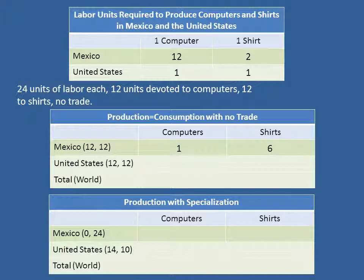In the United States, even easier, because it just takes one unit of labor to get one computer and one unit of labor to get one shirt. Therefore, if you devote 12 units of labor to computers, you get 12 computers. You devote 12 units of labor to shirts, you get 12 shirts. So the total world production of computers is 13 computers and total world production of shirts is 18 shirts.